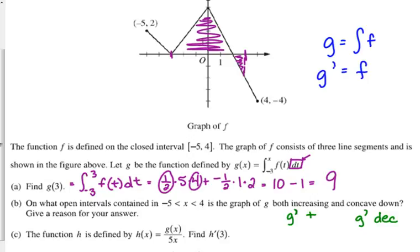If G is the integral of F, G prime is F. So we are looking for where this graph, F, we're looking for where this graph is positive and decreasing. We want to know where it's positive and decreasing. So, obviously, positive up until 2. It is decreasing from negative 5 to negative 3, and from 0 to 2.